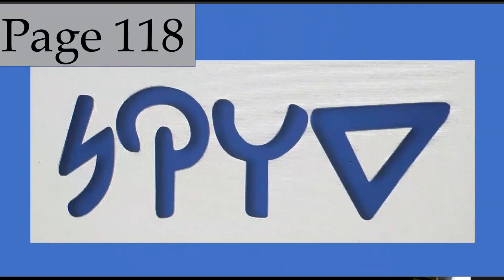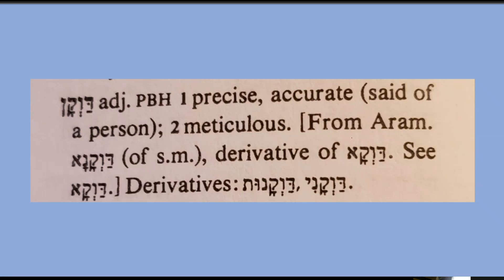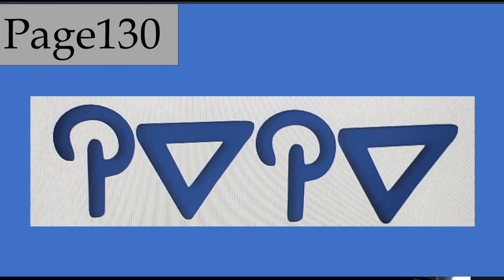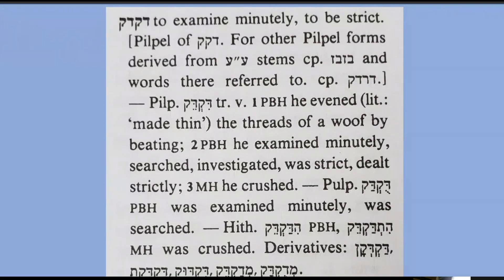On page 118, Dalit-Waw-Kuf-Nun is defined as precise, accurate, said of a person, meticulous, with a couple derivative spellings. On page 130, Dalit-Kuf-Dalit-Kuf is defined as to examine minutely, to be strict. He evened — something about woof and beating and weaving. He examined minutely, searched, investigated, was strict, dealt strictly, he crushed, examined minutely, was searched. There are a few derivative spellings.